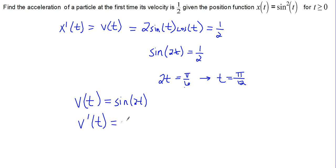V prime of t, which is a of t, the acceleration, should be, once again using the chain rule, that's sine of u, so that should be cosine of u with u equal to 2t, times the derivative of u, or the derivative of 2t, which is just 2. So we end up with 2 cosine of 2t.